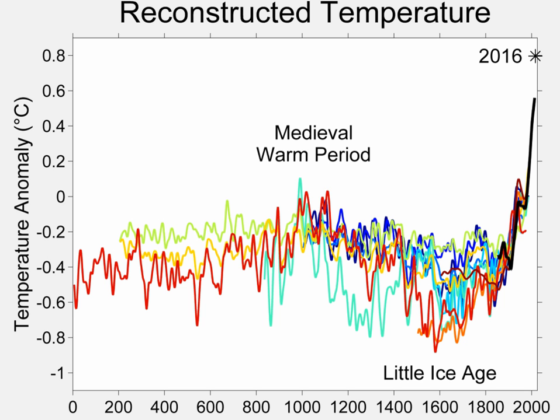Most proxy records have to be calibrated against independent temperature measurements, or against a more directly calibrated proxy, during their period of overlap to estimate the relationship between temperature and the proxy. The longer history of the proxy is then used to reconstruct temperature from earlier periods.